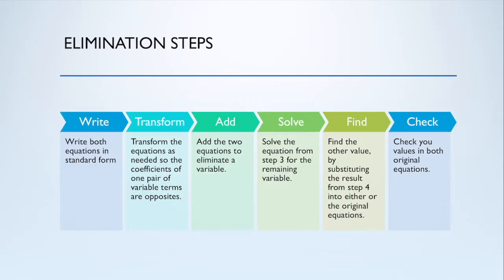Here are the steps. First, we want to write both equations in standard form. Because we aren't substituting, we need to get them both in standard form. We need to transform the equations as needed so the coefficients of one pair of variable terms are opposites. We're going to add the two equations to eliminate a variable. Solve the equation from step 3 for the remaining variable and find by substituting back in the value of our other variable. And as always, check your solutions.